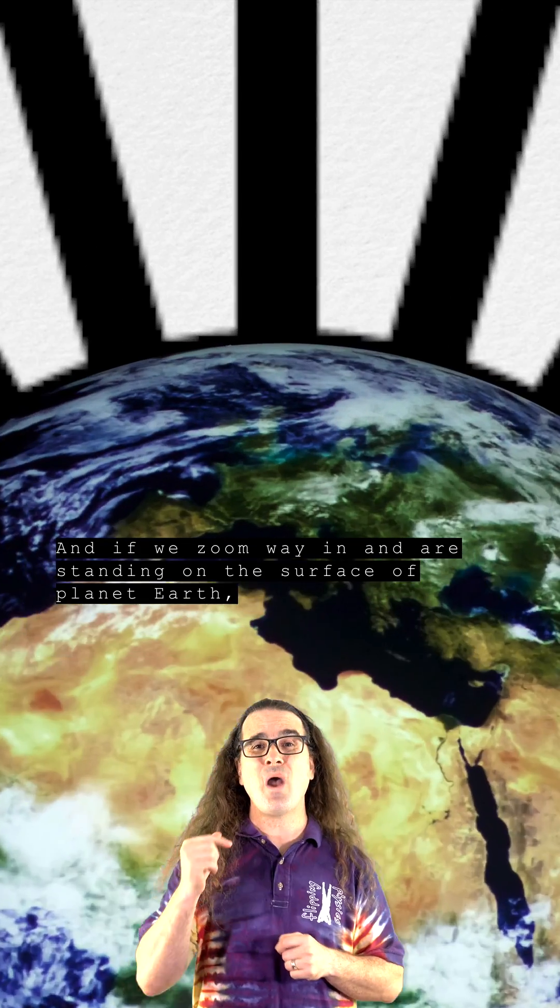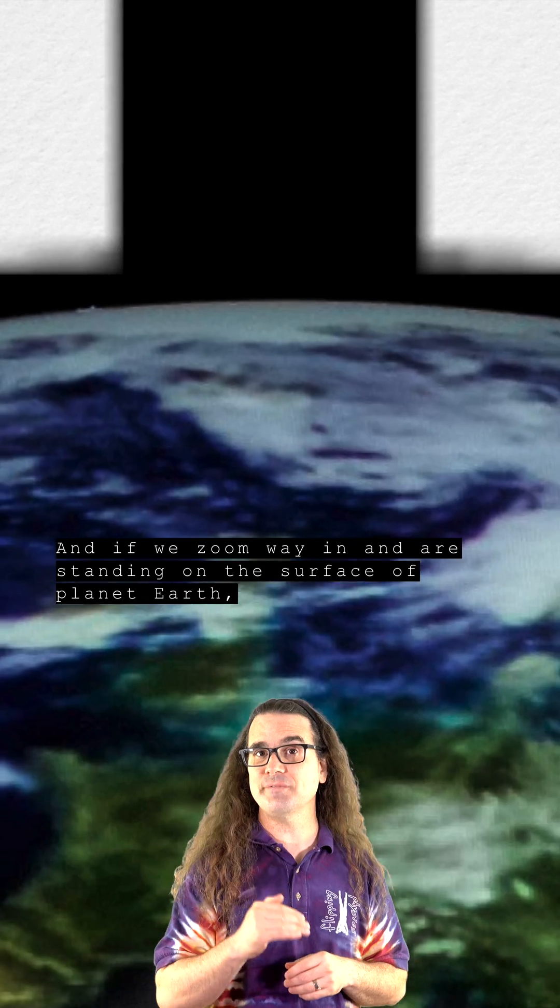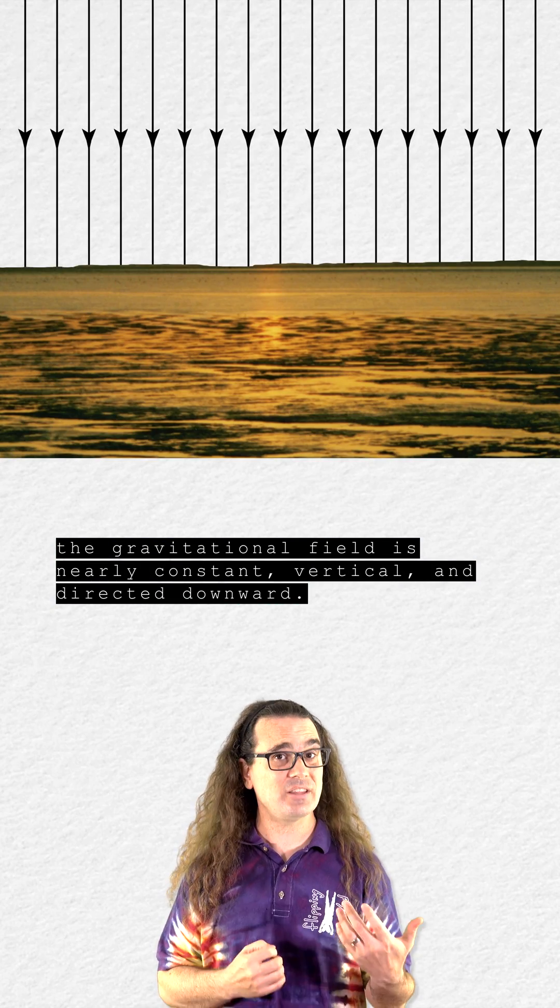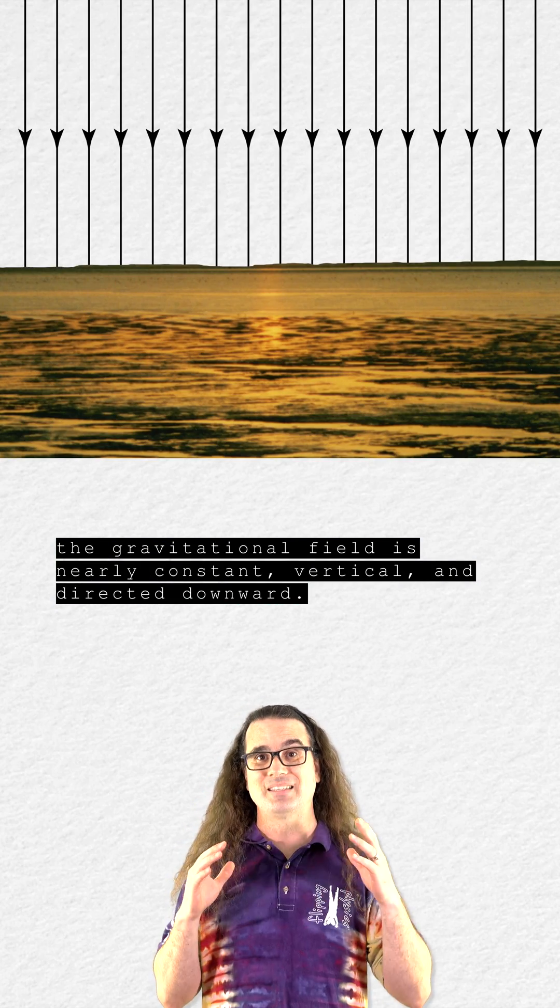And if we zoom way in and are standing on the surface of planet Earth, the gravitational field is nearly constant, vertical, and directed downward.